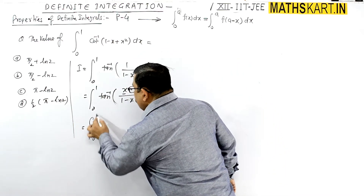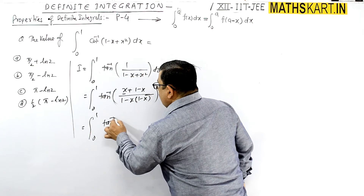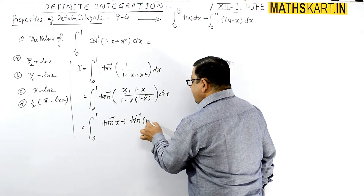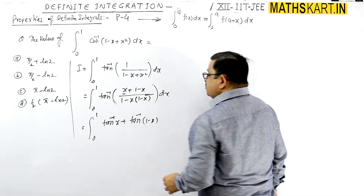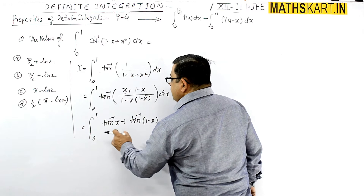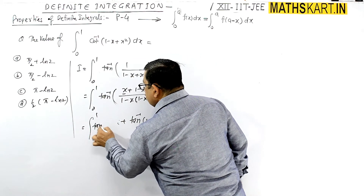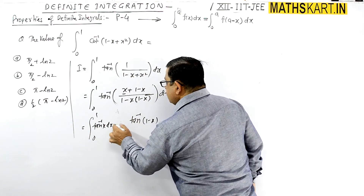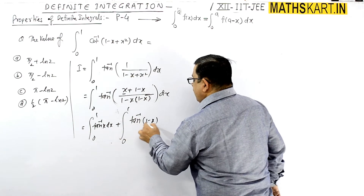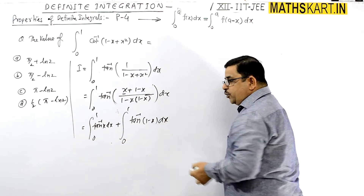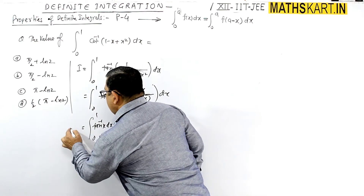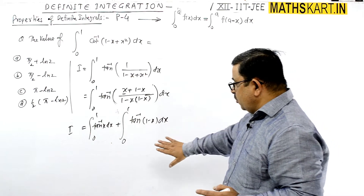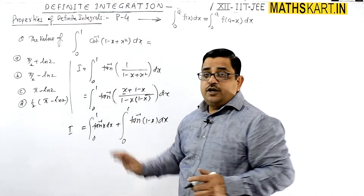Using the formula tan inverse of (A plus B) over (1 minus AB), it can be written as the integral from 0 to 1 of tan inverse x plus tan inverse of (1 minus x) dx. We can separate this into two integrals — tan inverse x dx plus the integral from 0 to 1 of tan inverse (1 minus x) dx.